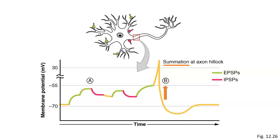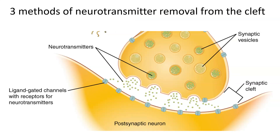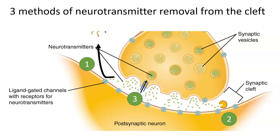Before we go, I have to talk a little bit about cleanup back at the synaptic cleft. After neurotransmitters are released into the cleft, there are several things that can happen to get rid of them. If the neurotransmitter remains in the cleft for a prolonged period of time, constant activation or inhibition of the postsynaptic neuron could happen, which tends not to be a good thing. The three main removal methods are: diffusion out of the synaptic cleft into the surrounding extracellular fluid; degradation by certain enzymes; or reuptake by surrounding glial cells or by the synaptic terminal itself.